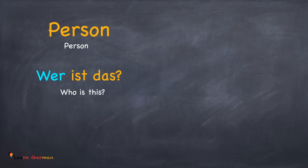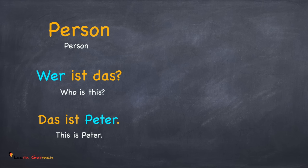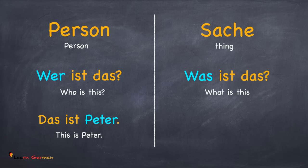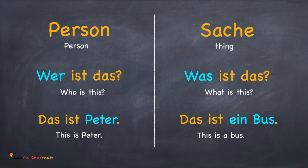Wer ist das? Das ist Peter. In the case of a person, your question is formulated with wer. You can see the answer — it's with Peter. For a thing: Was ist das? Das ist ein Bus. Whenever you're talking about a thing, your question will be with was. Basically, the questions wer and was help you in identifying the Nominativ.